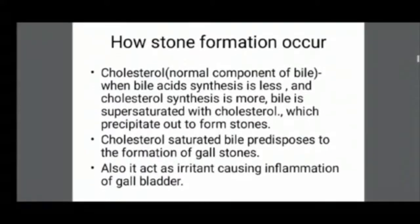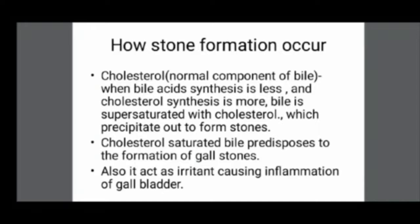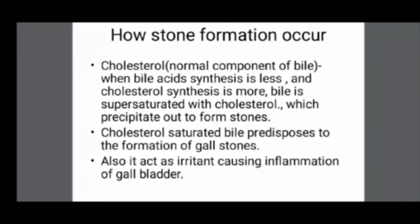How does stone formation occur? Gallstones are basically made up of cholesterol. Cholesterol is a normal component of bile, and bile acids help to dissolve the cholesterol. In any condition where cholesterol synthesis in the liver is more and bile acid synthesis is less, the bile becomes supersaturated with cholesterol. If a person takes a lot of fats and bile acid production is low, excess cholesterol will precipitate out to form gallstones.